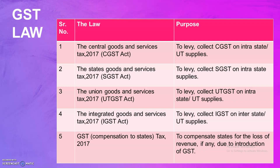Second is the State Goods and Service Tax 2017, the SGST Act. The main purpose of the SGST Act is to collect tax on intrastate supplies. Third comes the Union Territory Goods and Service Tax 2017, the UTGST Act, which basically deals with the purpose to levy and collect UTGST on intrastate as well as union territory supplies.